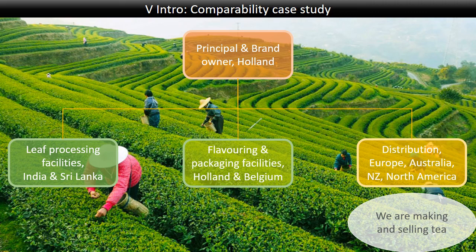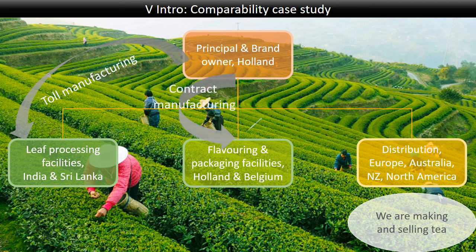As we go through the comparability analysis, we'll also go through the different methods. In our case study, the leaf manufacturing and processing facilities in India and Sri Lanka are toll manufacturers, which means they run no risk in their activities and don't take inventory — the inventory remains the asset of the principal at all times. Even if it's delivered from a supplier to the processing facilities, it still legally belongs to the principal in Holland. When Holland has the processed tea leaves produced into tea, it has contract manufacturing agreements with facilities in Holland and Belgium, and then sells the processed tea leaves to these facilities, which package everything and sell it back to the principal.